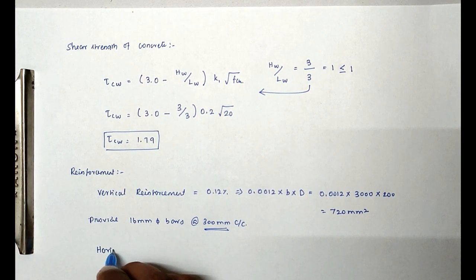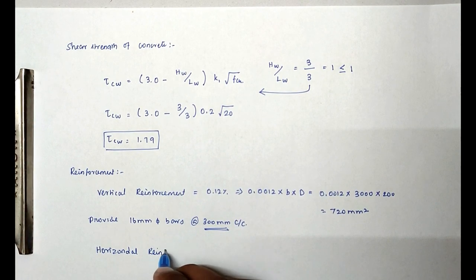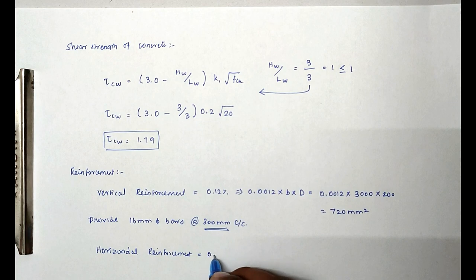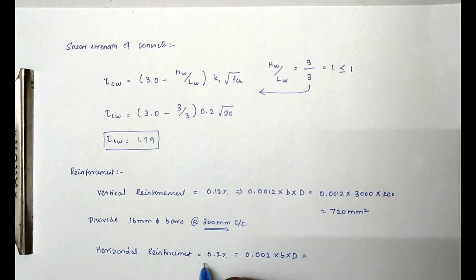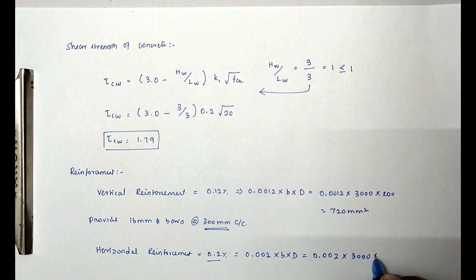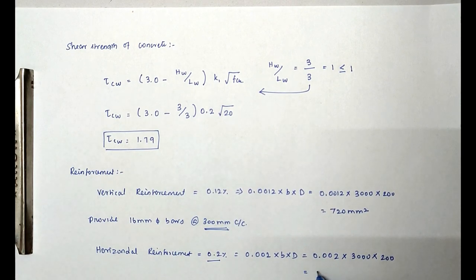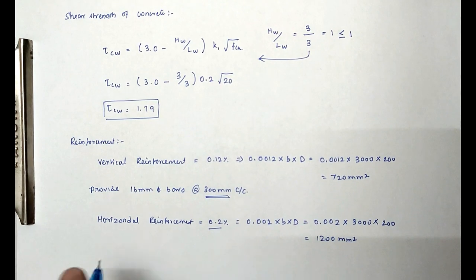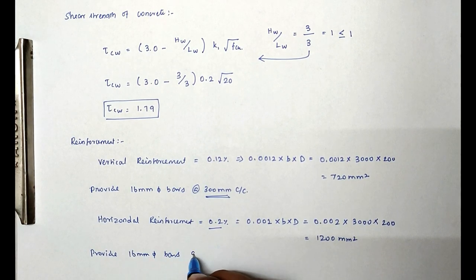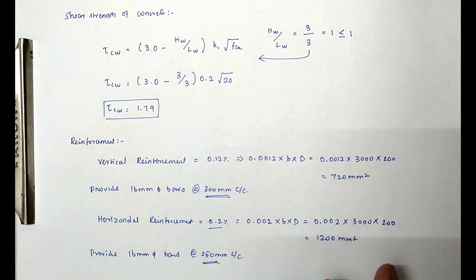For the horizontal reinforcement: 0.002 × B × D = 0.002 × 3000 × 200 = 1200 mm². Provide 16 mm diameter bars at 250 mm center to center. This is the method to design the shear wall. We will see more in the next video. Thank you.